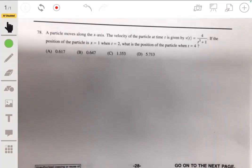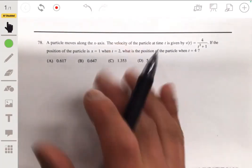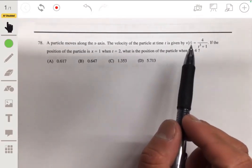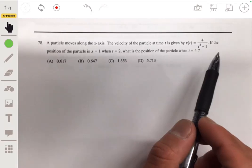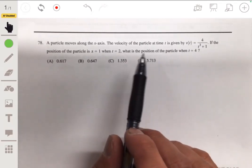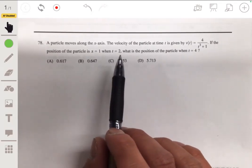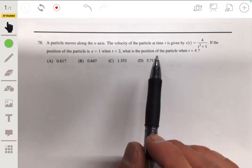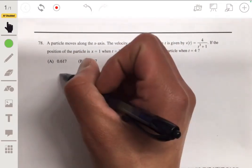Right, number 78. The particle moves along the x-axis. The velocity of the particle at time t is given by this equation: v(t) equals four over t cubed plus one. If the position of the particle is x equals one when t equals two, what's the position when t equals four? Okay, so for this we just integrate.